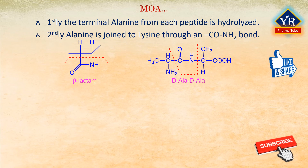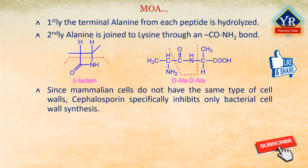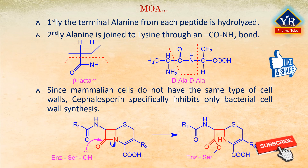Cephalosporin irreversibly inhibits the enzyme transpeptidase by reacting with a serine residue in the transpeptidase. This reaction is irreversible and so the growth of the bacterial cell wall is inhibited. Since mammalian cells do not have the same type of cell walls, cephalosporin specifically inhibits only bacterial cell wall synthesis. The last step in peptidoglycan synthesis is inhibited by all beta-lactam antibiotics, in this case the cephalosporins. The transpeptidase enzyme that contains serine is probably acylated by beta-lactam antibiotics with cleavage of the C-O-N bond of the beta-lactam ring, as shown in red color in the figure. This renders the transpeptidase enzyme inoperative and inhibits peptidoglycan synthesis.